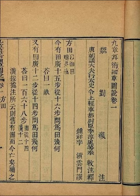The Nine Chapters on the Mathematical Art, known in Simplified Chinese as Zhu Zhang Suan Shu, and in Wade-Giles romanization as Chu Chang Suan Shu, is a Chinese mathematics book.